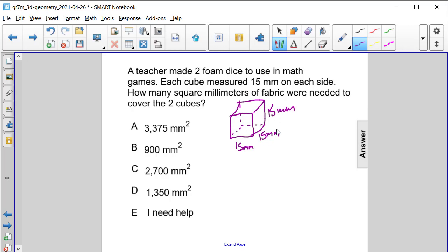So if we were to unfold each die, it would be composed of six squares.